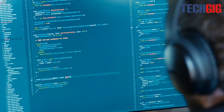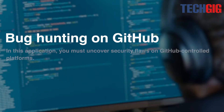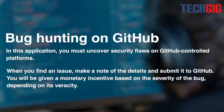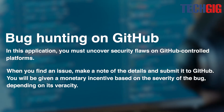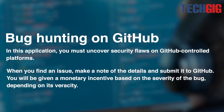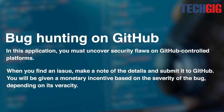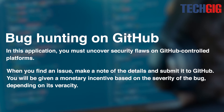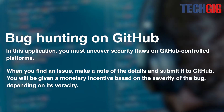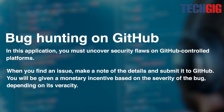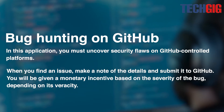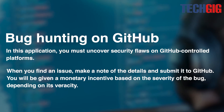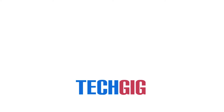Bug hunting on GitHub: you must uncover security flaws on GitHub-controlled platforms. When you find an issue, make a note of the details and submit it to GitHub. You will be given a monetary incentive based on the severity of the bug.